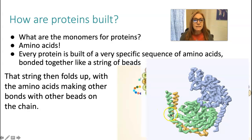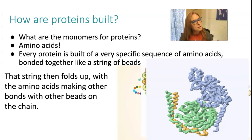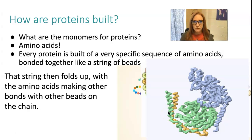The folding is determined by the sequence of amino acids and how they're going to bond together across that string. So if they're not in the right sequence, if the amino acids aren't in the right sequence or they don't bond properly, they're not going to fold properly, and the protein won't do its job.